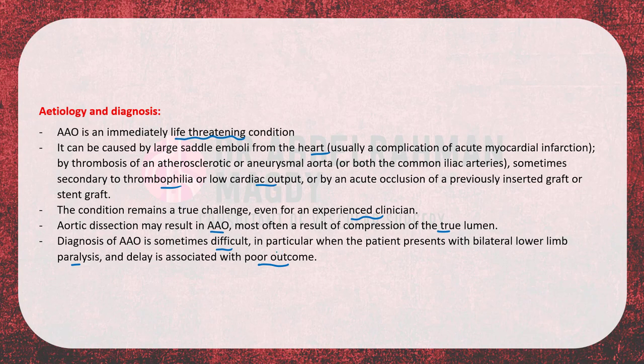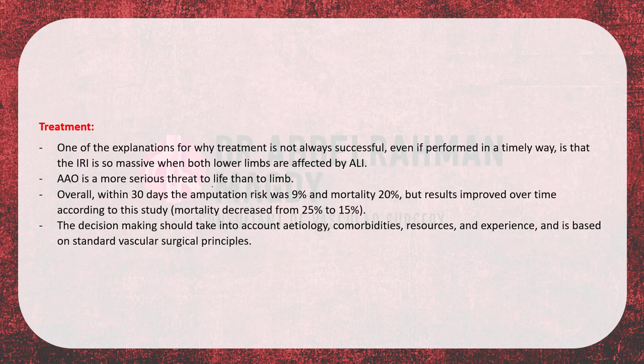One explanation for why treatment is not always successful and why it is associated with very high mortality even when performed in a timely way is that the ischemia-reperfusion injury is so massive compared to that seen in single-limb acute ischemia. Acute aortic occlusion is therefore more of a threat to life than to limb.